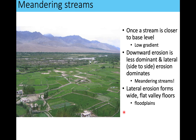Meandering streams occur when the stream reaches base level or very close to sea level. The erosional forces downward that would create a valley or channel are much less, and the erosion actually picks up side-to-side — lateral erosion. This lateral erosion is what creates meandering streams, side to side instead of up and down.